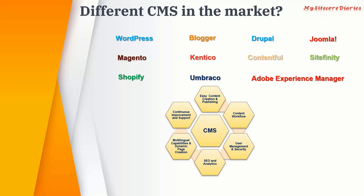So what does a CMS offer? First is easy content creation and publishing — any CMS should have functionality that makes it easy to manage and publish content. Then there is content workflow, which is important for controlling what gets published to the live website. Anything you publish should not go directly to the live site, because there might be incomplete or unauthorized content. So it should have a controllable content workflow. Then there is user management and security — you should be able to create users, update passwords, and manage access and permissions.